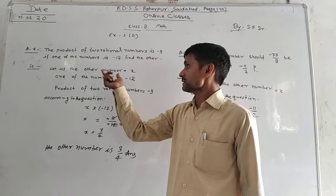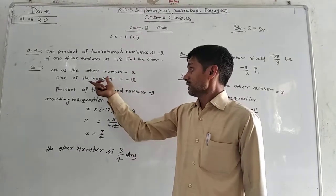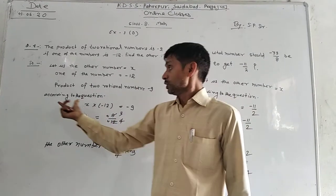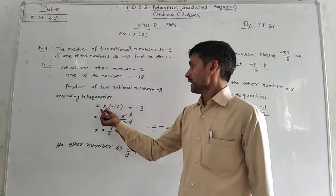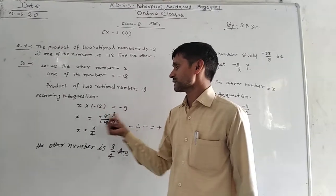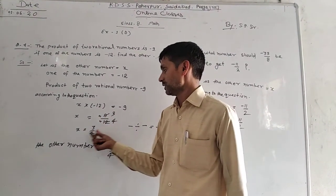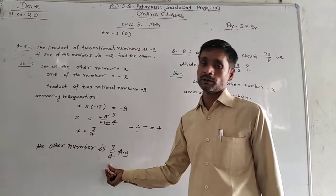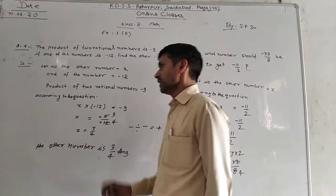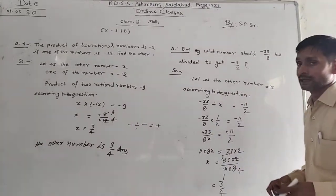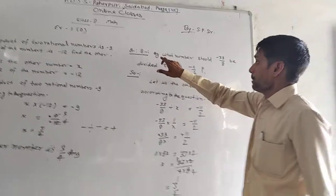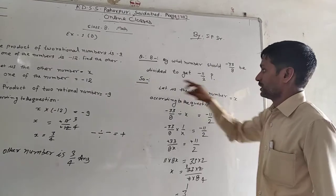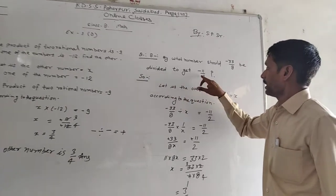To find the other number, let it equal x. One number is equal to minus 12. Product of the numbers is equal to minus 9. Therefore x is equal to minus 9 upon minus 12, which gives us x is equal to 3 by 4. So our number is 3 upon 4, the second number.